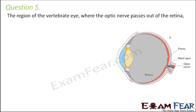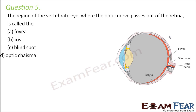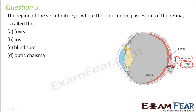Question number 5: the region of the vertebrate eye where the optic nerve passes out of the retina is called the fovea, iris, blind spot, or optic chiasma. The optic nerve passes out of the retina at the blind spot, so blind spot is the correct answer.